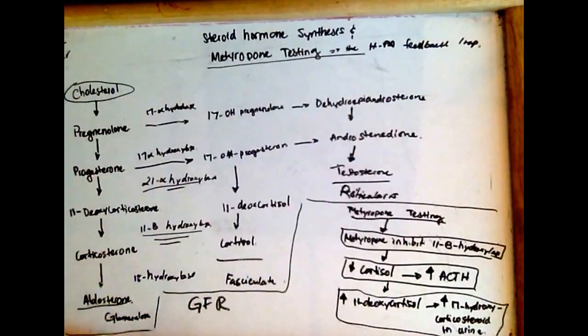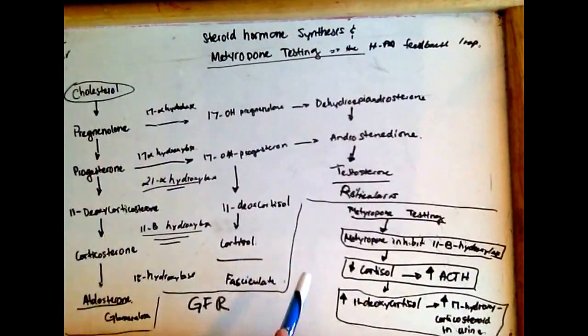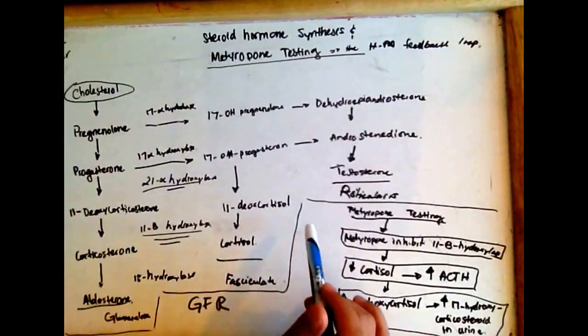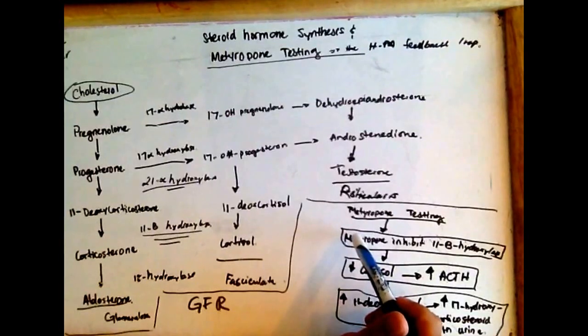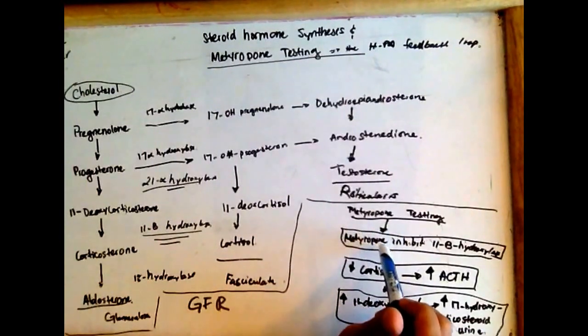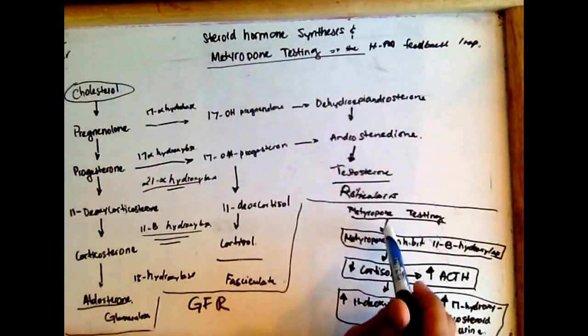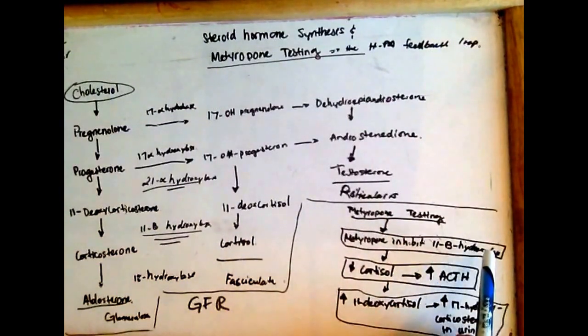Metyrapone testing is indicated when there is suspicion of interruption in the hypothalamic-pituitary-adrenal feedback loop. Metyrapone blocks cortisol synthesis by inhibiting 11-beta-hydroxylase, which is responsible for serum cortisol levels.